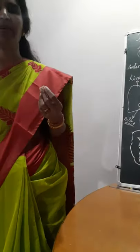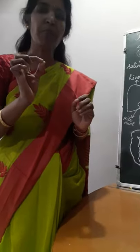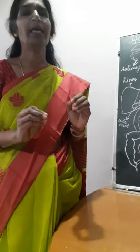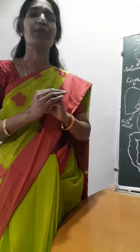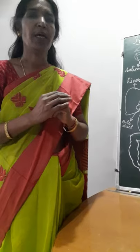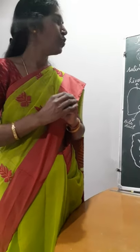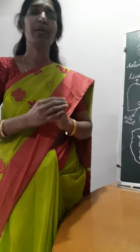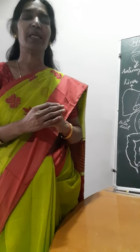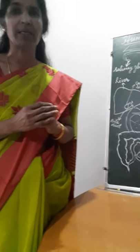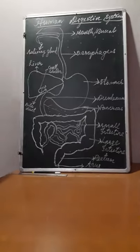Holozoic nutrition means complex food is broken down into simpler ones, which will be absorbed by an organism. You have already learnt about holozoic nutrition in amoeba in the previous class. Today we are going to discuss holozoic nutrition in human beings — that is, nutrition in human beings.